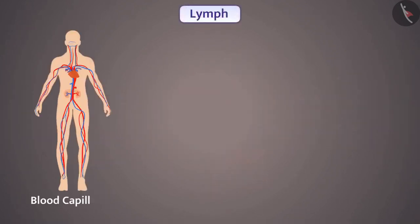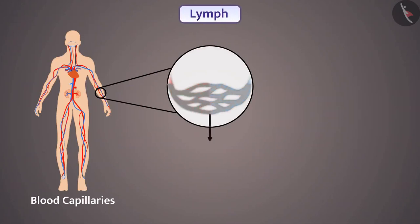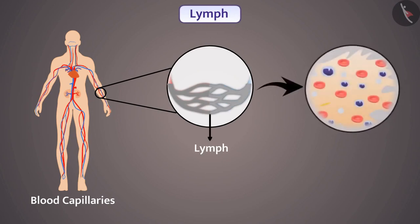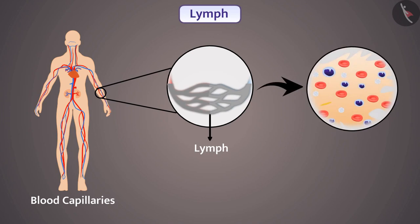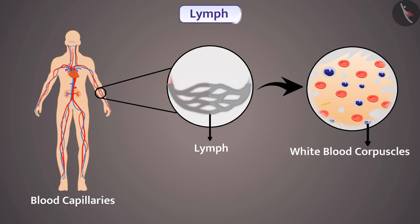From blood capillaries, a fluid is secreted which is called lymph. This fluid is present around the cells of the body. The cells of the lymphatic tissue, i.e. white blood corpuscles, are suspended in the fluid matrix. Lymph provides immunity to the body.